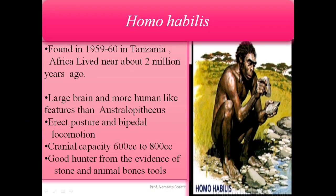Next is Homo habilis, also known as the 'handy man.' It was found in 1959 to 1960 in Tanzania, Africa, and lived about two million years ago. It had a larger brain and more human-like features than Australopithecus, showing erect posture and bipedal locomotion. Its cranial capacity is about 600 to 800 cc. It was a good hunter and made tools with animal bones and stones, hence the nickname 'handy man.'